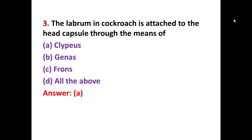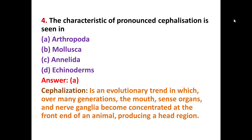MCQ number three: in cockroaches, the labrum is attached to the head capsule through which structure? The options are a) clypeus, b) gena, c) frons, and d) all of the above. Option A is correct — the clypeus is the correct answer.